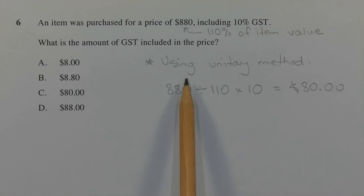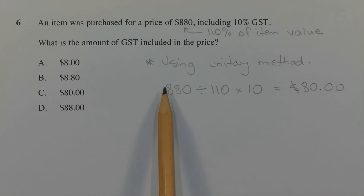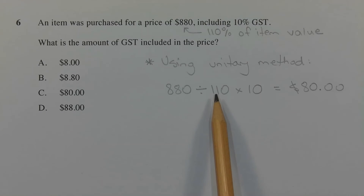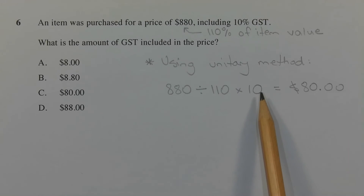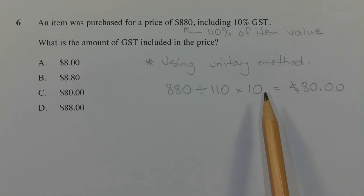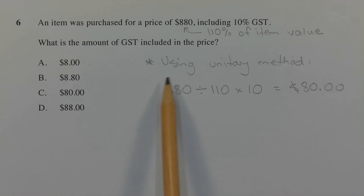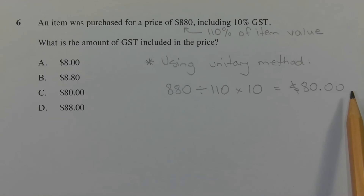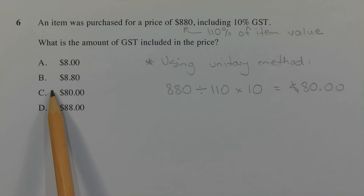Starting with the price of $880, dividing that by 110 to get the value of 1%, and then multiplying by 10 to get the value of 10% — we can do that all in one step — we get $80. Therefore the correct answer is option C.